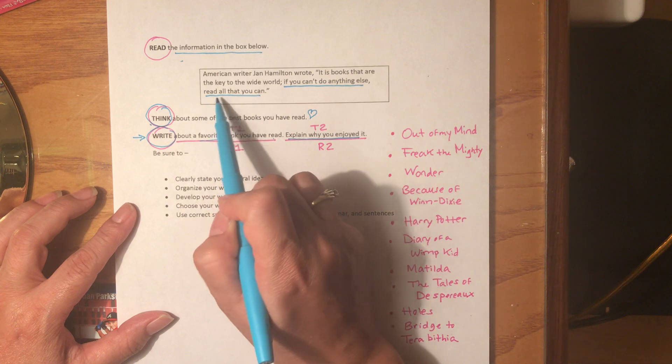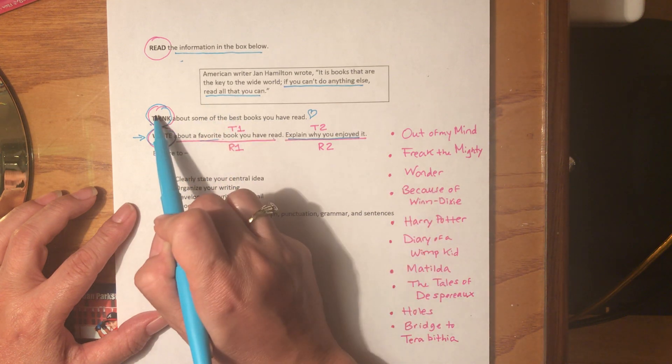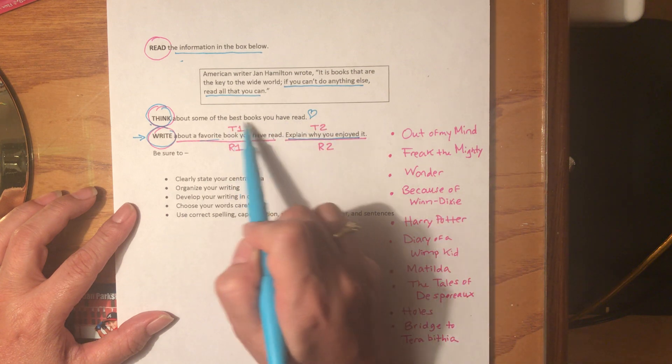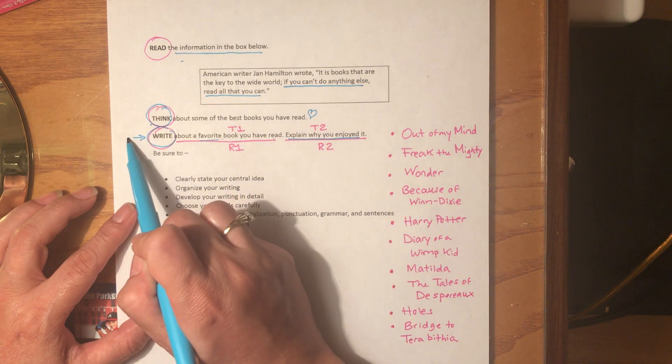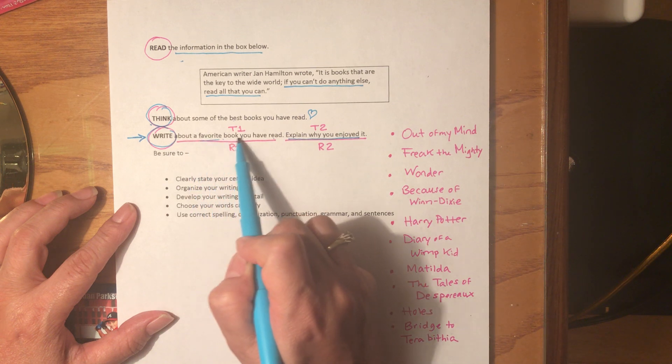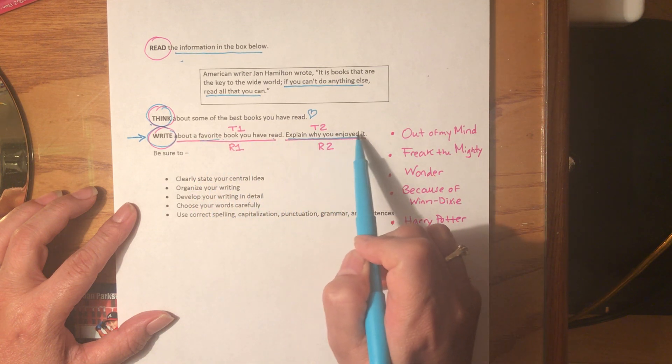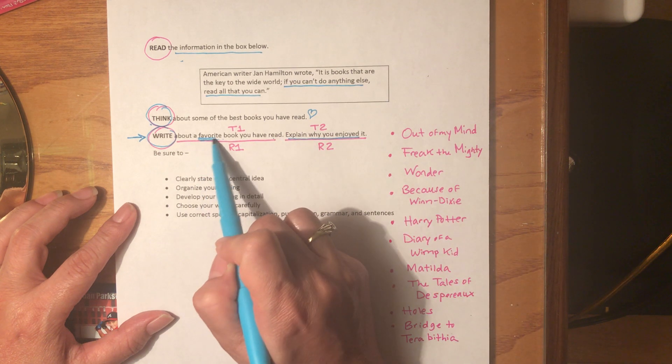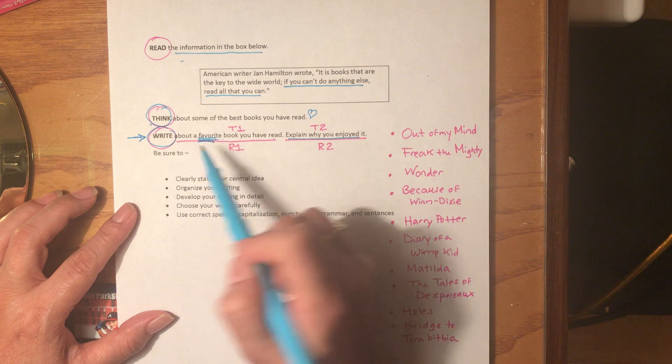So this is good advice for right now. If you can't do anything else, read all that you can. Think about some of the best books that you have read. What you have to do is write about a favorite book you have read and explain why you enjoyed it. This is where you start thinking and listening.